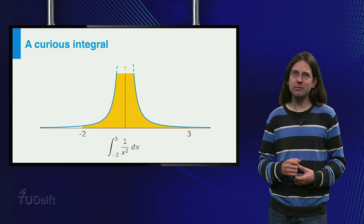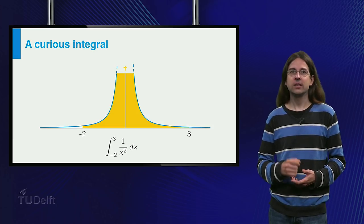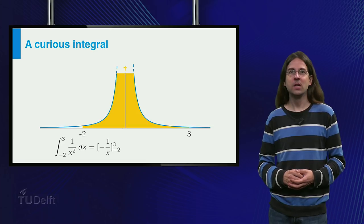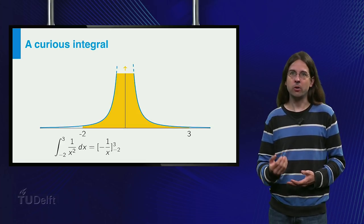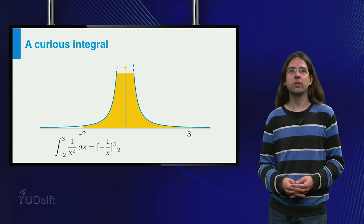Do you remember the antiderivative of 1 over x squared? 1 over x squared is x to the power minus 2, so an antiderivative is 1 over minus 1 times x to the power minus 1, which is minus 1 over x.